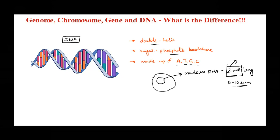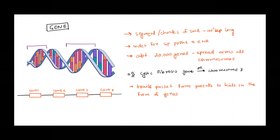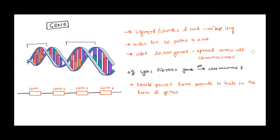Keep this point in mind — this two-meter-long DNA, we'll come back to this, it's very important to understand. So DNA is double helix, has a sugar-phosphate backbone, and is made up of four nucleotides. We are done with DNA, we are clear about DNA. Now after DNA comes genes — I'm going in a flow, which will make it easy to understand.